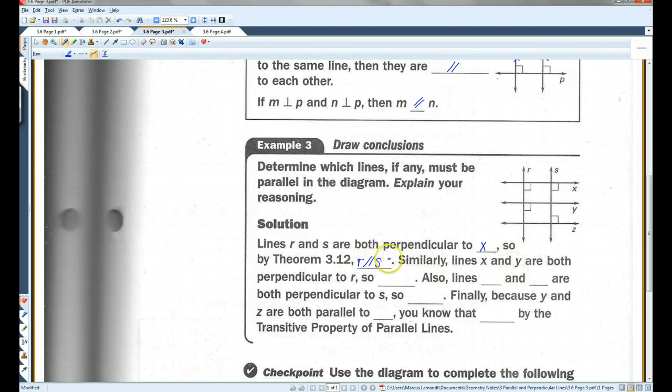Similarly, lines X and Y are both perpendicular to R. As you can see, X and Y, X is perpendicular to R, Y is perpendicular to R. So X is parallel to Y. Also, lines X and Z are both perpendicular to S. So X is perpendicular to Z. Finally, because Y and Z are both parallel to X, you know that Y is parallel to Z by the transitive property. Basically, if X is parallel to Z and X is parallel to Y, then Y and Z have to be parallel also because of the transitive property.